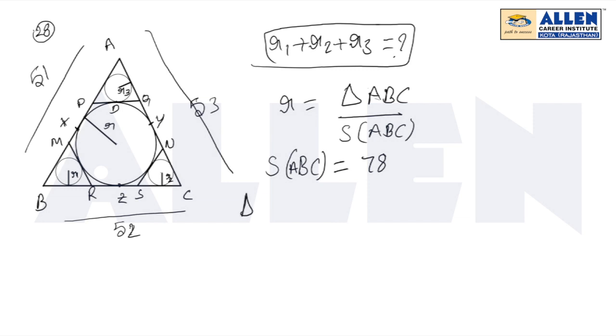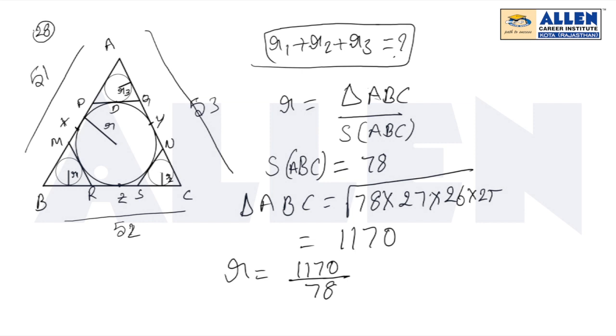The area of triangle ABC by using Heron's formula: 78 times 27 times 26 times 25, which equals 1170. Therefore, the inradius equals 1170 divided by 78, which equals 15. Keep this in mind, this is an important result.